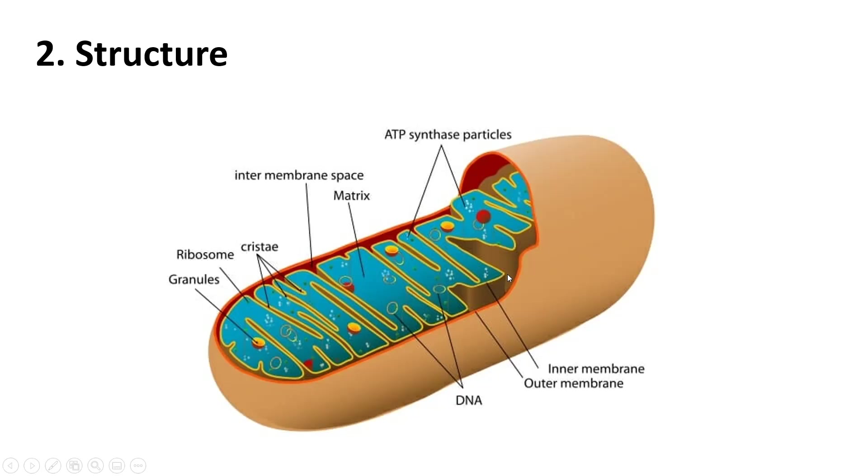This inner membrane is selectively permeable. It only allows specific things to go in and out of it, into the matrix, and into the inner membrane space. The inner membrane space is the space between the outer and the inner membranes. The matrix is the fluid in everything that's held in the inner membrane.